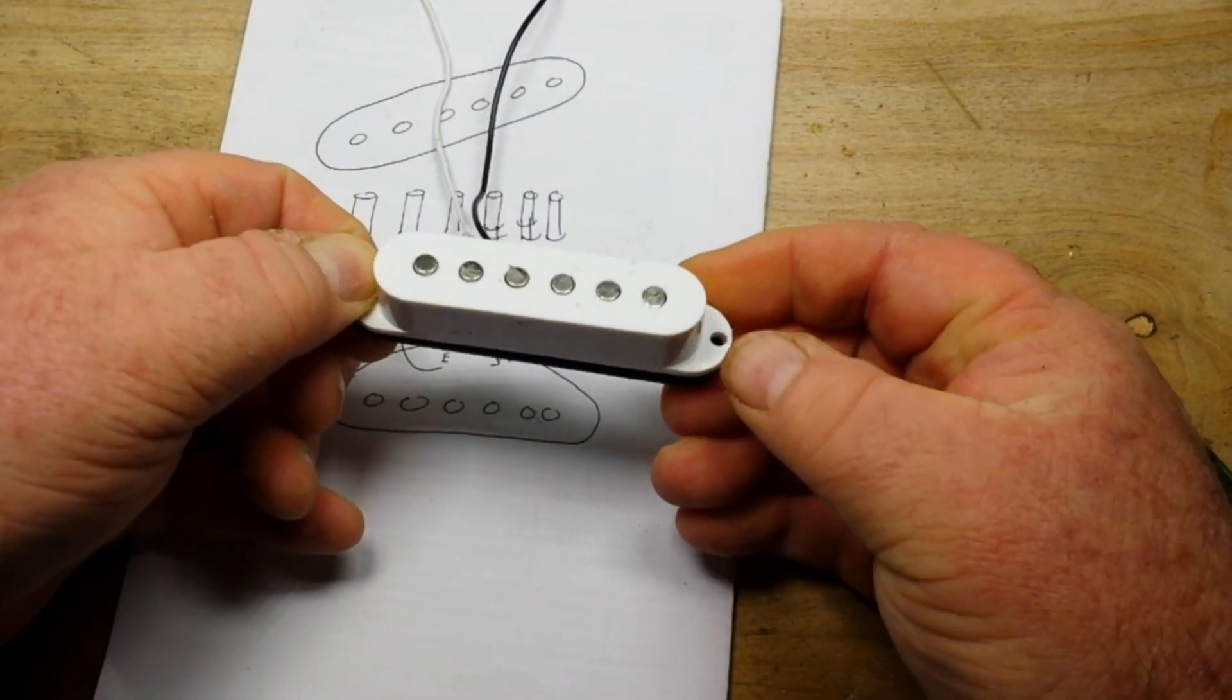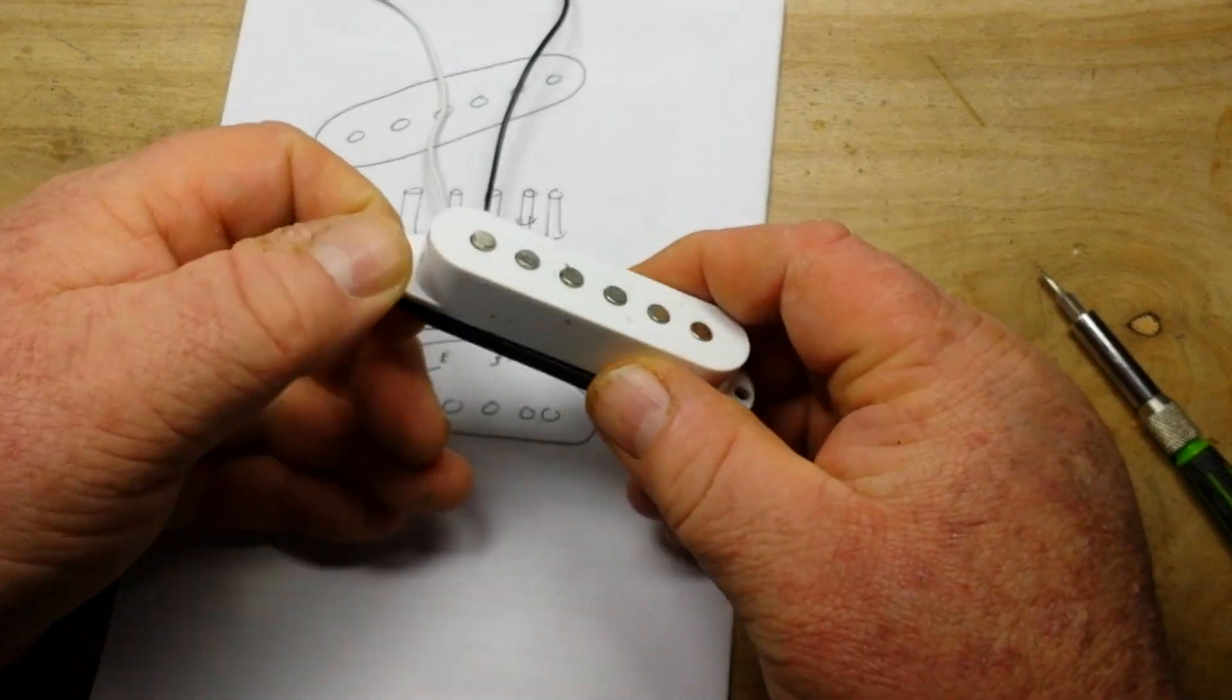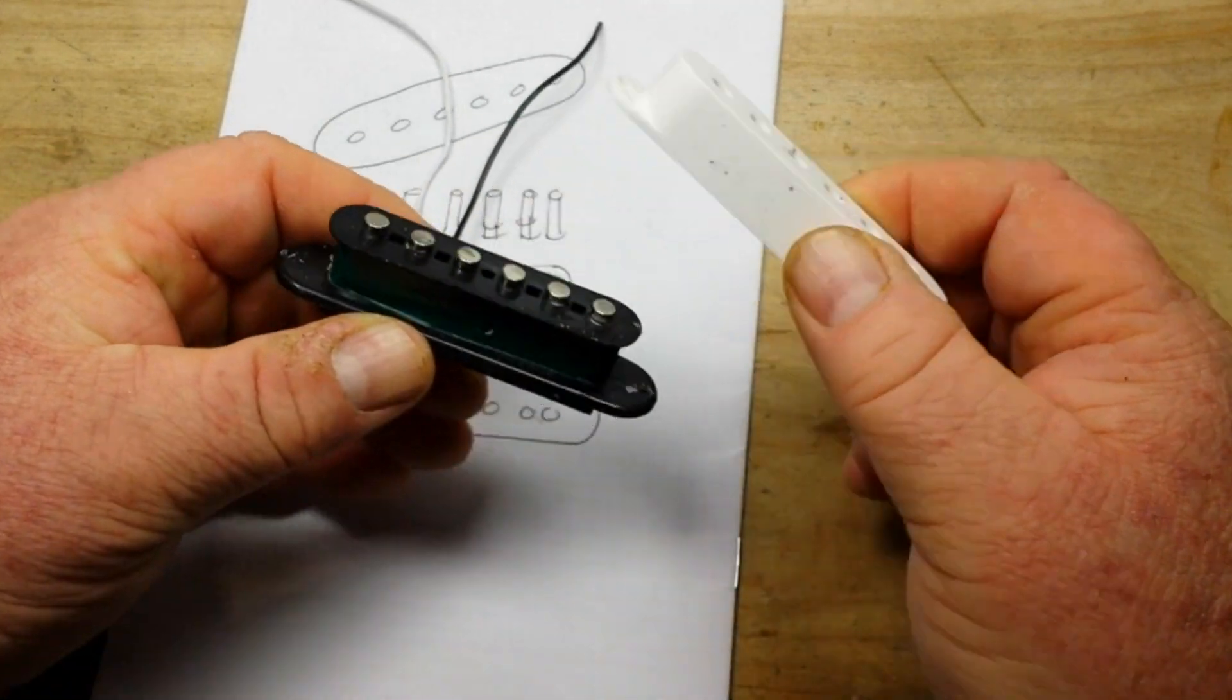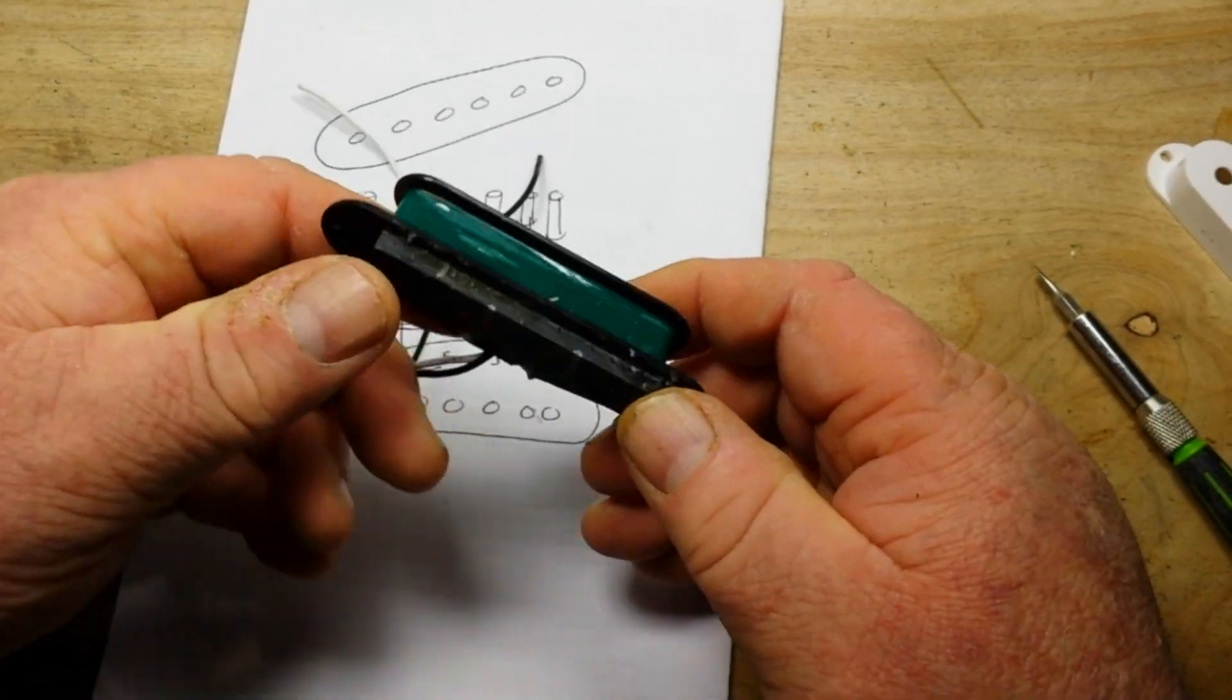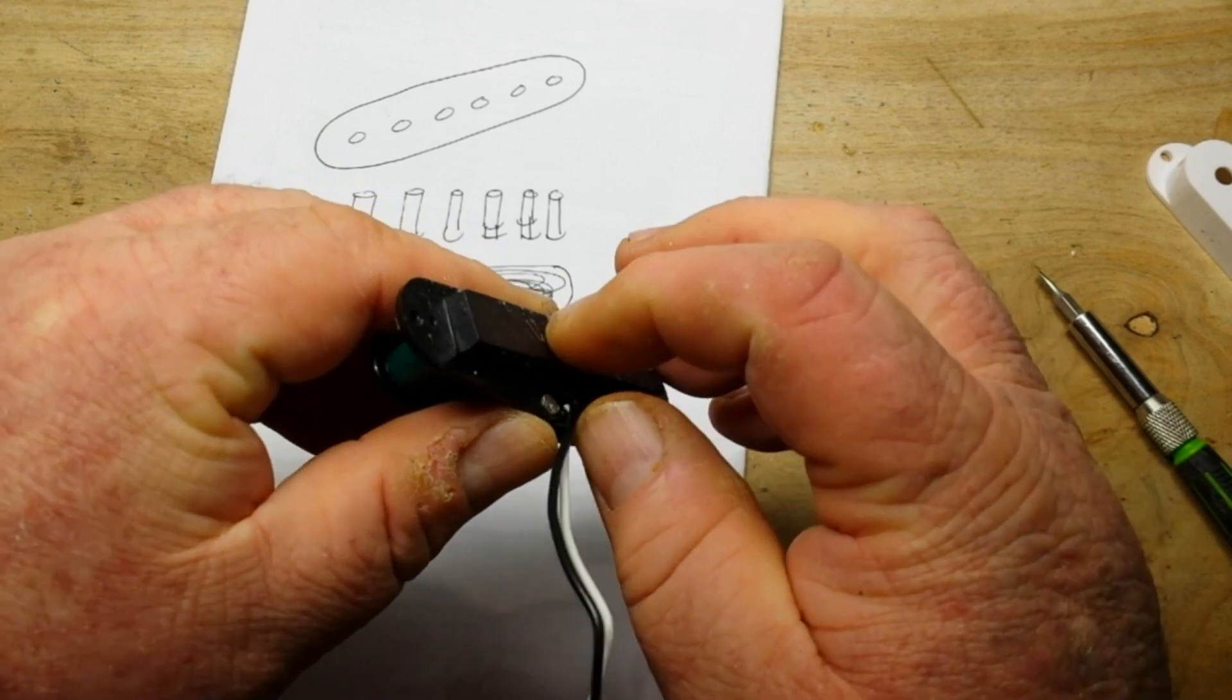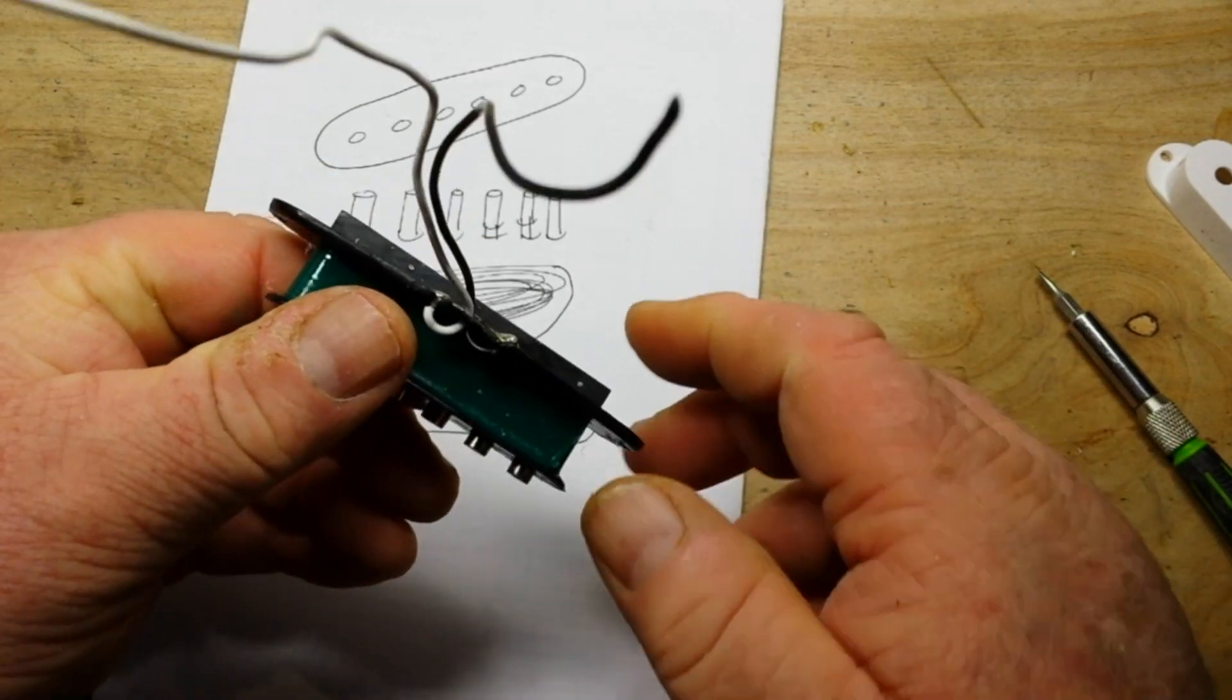So here's our pickup. These pieces, it's just a cosmetic cover. It comes off like that. Now you can see our magnet here attached to the bottom.